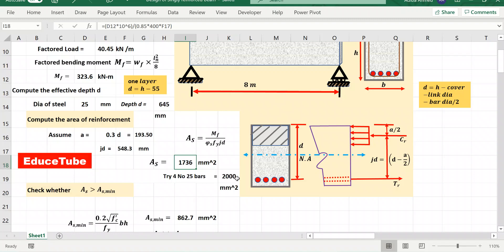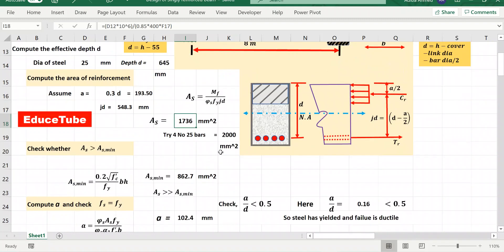Now this 1736, I considered or I assumed four numbers 25 bar, it will be equal to 2000. So as per this reinforcement, I want to be sure is it greater than or less than As_minimum. It is very important because if it less than As_minimum then we must go for the As_minimum value. But using the formula, after calculation I got As_minimum only 862, so it is very less. So our As is much greater, so we will stick with this one.